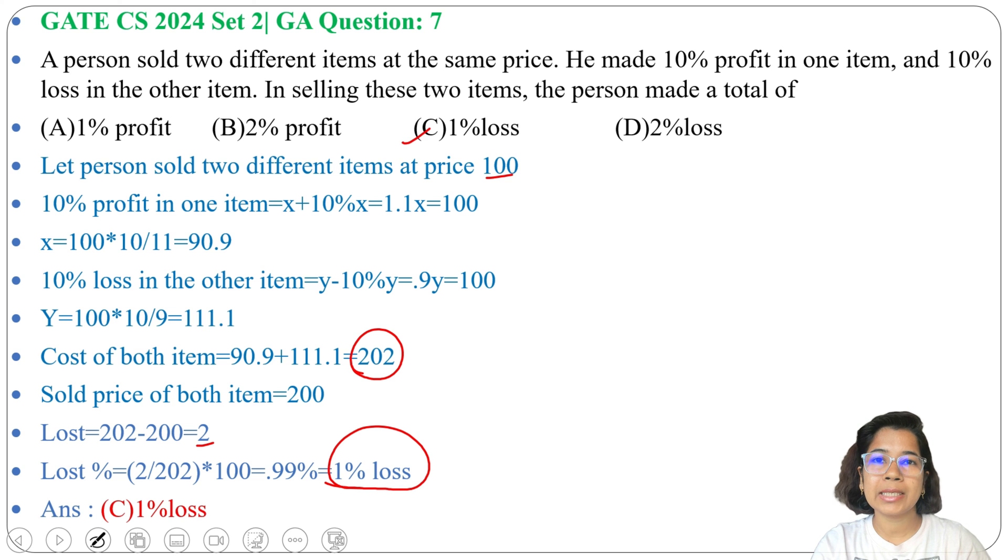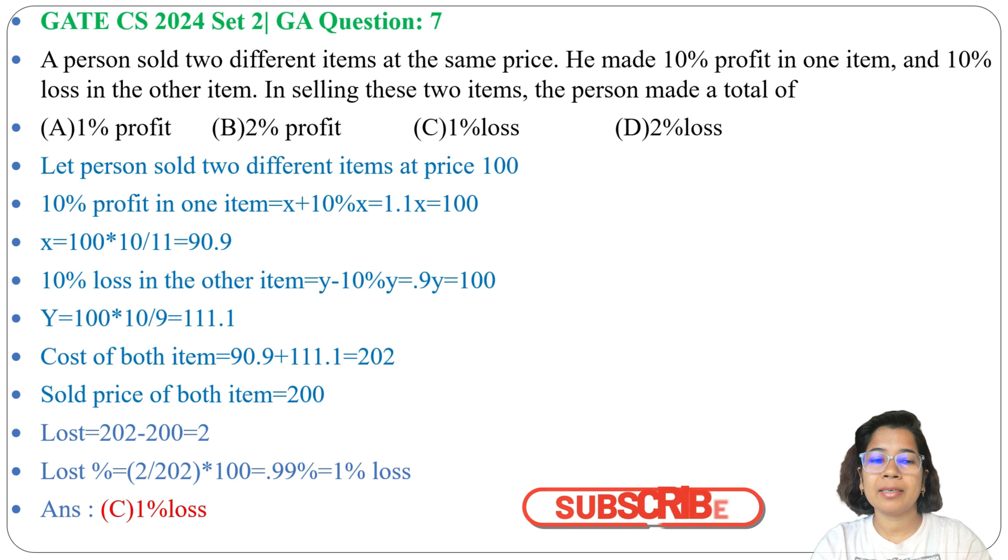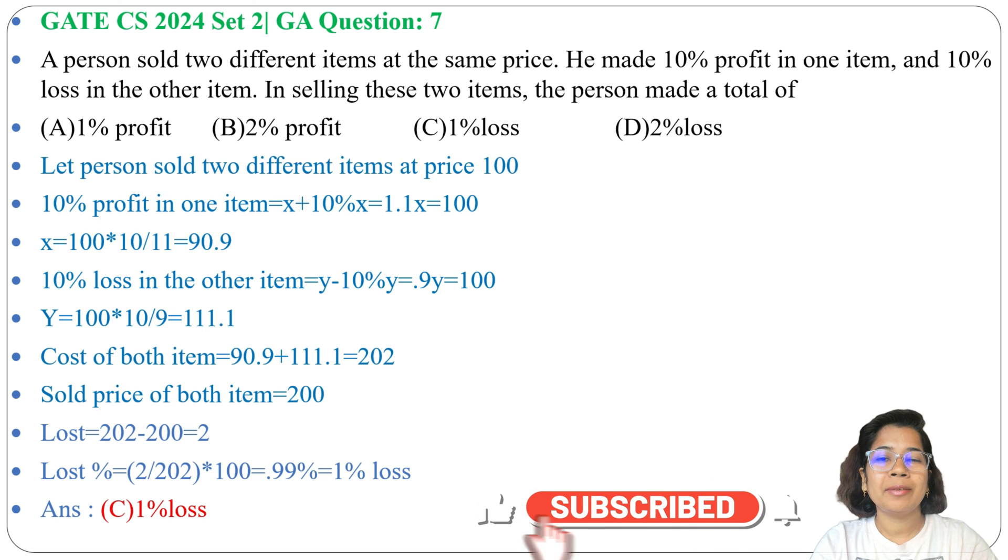So the person made a total of 1% loss by selling these two items. This question is easy, you just need to analyze the data. If this lecture is helpful, please like, share, and subscribe. Thank you.